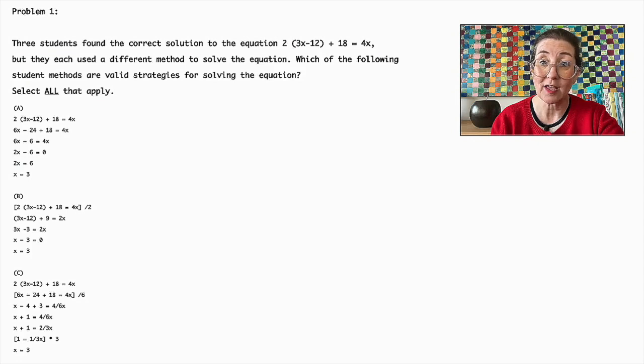And solving for x, the student arrives at the correct solution, x = 3. Similarly, option B starts by dividing the entire equation by 2, simplifying each term correctly.